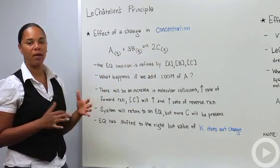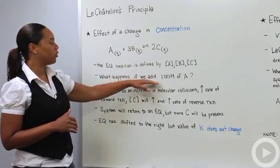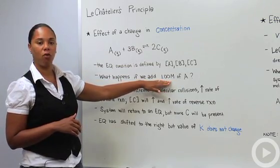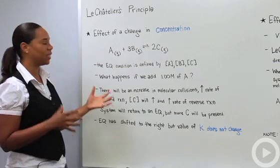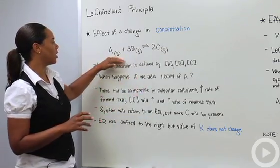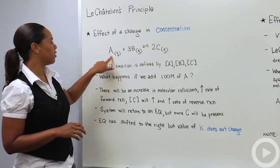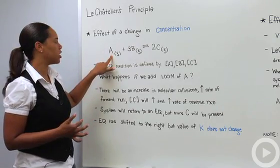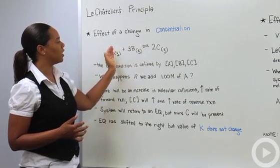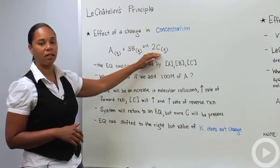So what would happen here if we increase the concentration of A by 1.0 molar? So basically the system is going to want to compensate for that. So there's going to be an increase in the molecular collisions happening here as a result of an increased concentration of the reactants. So A and B are going to be having more collisions, and as a result of that, creating more of the product, C.